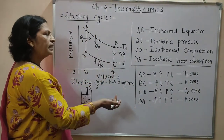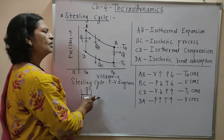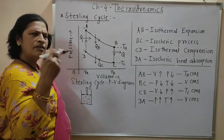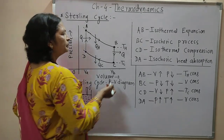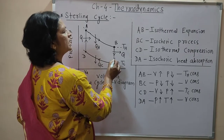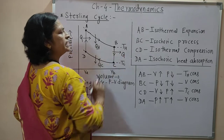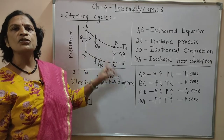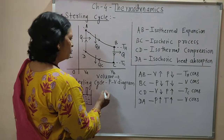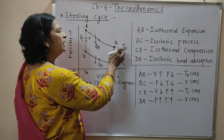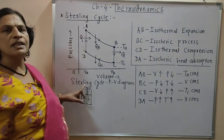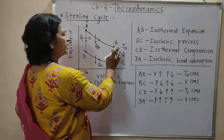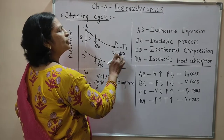After that, heat is rejected from the working substance — which may be air, helium, hydrogen, or nitrogen. The heat is rejected at constant volume, so the process is isochoric. During an isochoric process, volume remains constant and work done is zero. When heat is rejected, temperature decreases from TH to TC. During path BC, the process is isochoric.